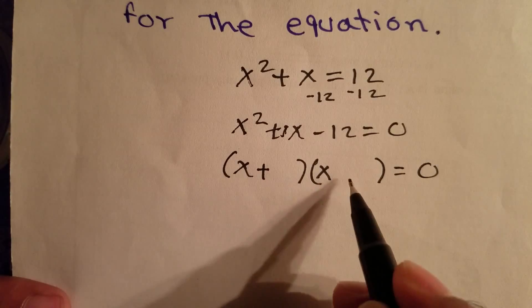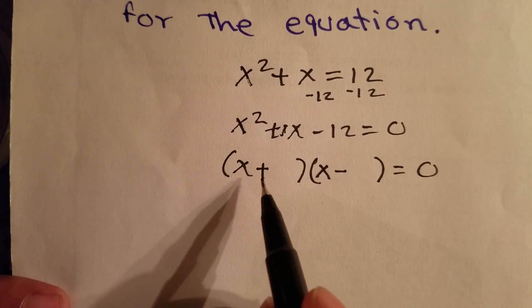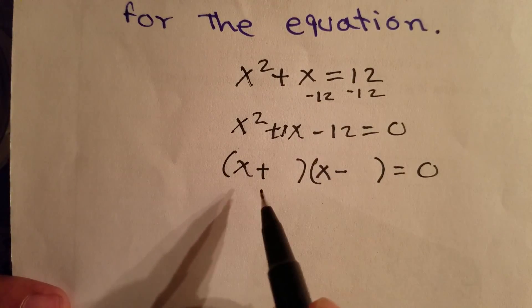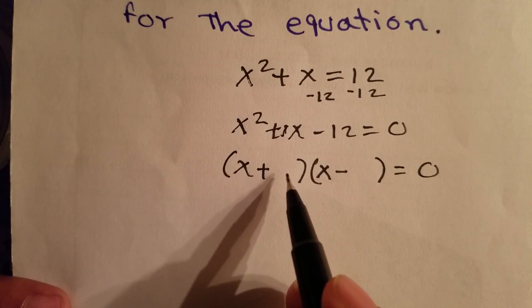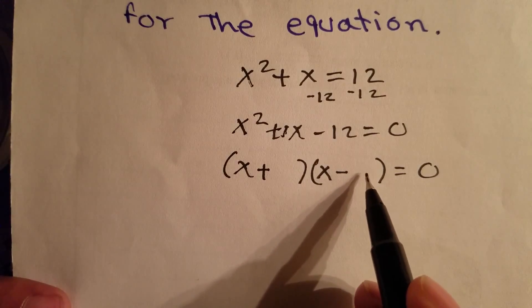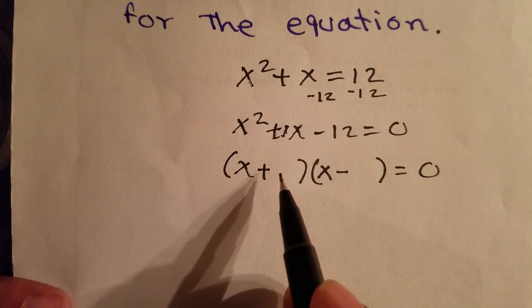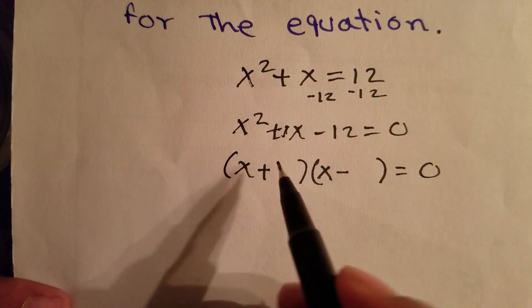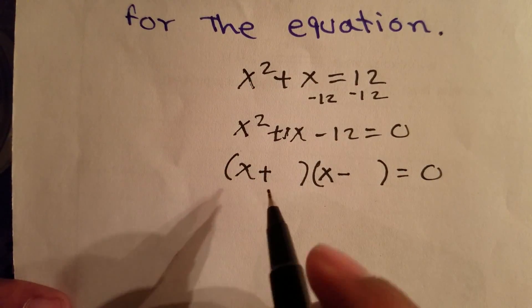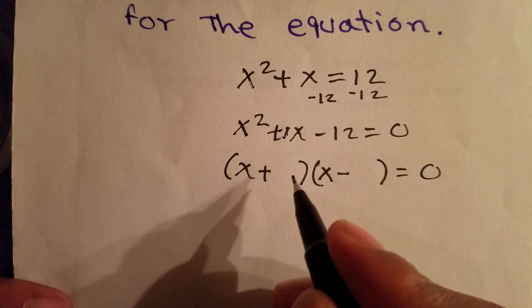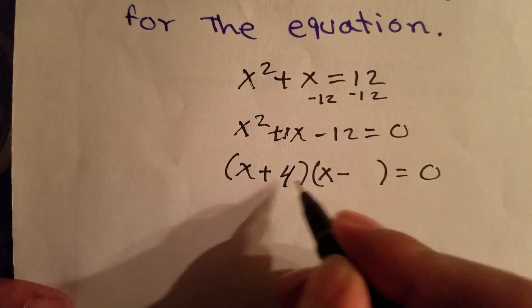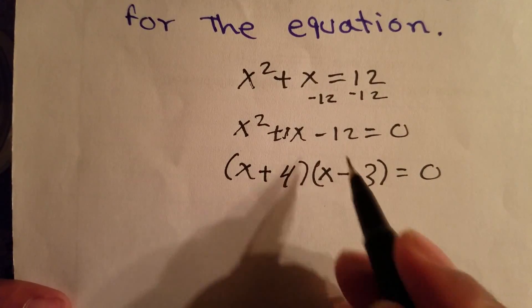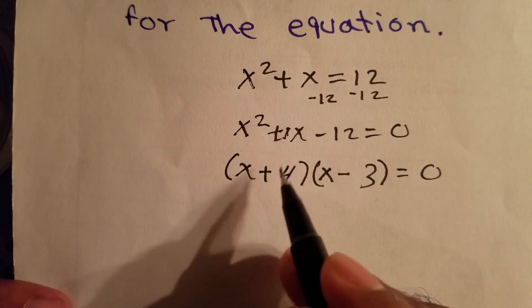This is going to be plus and minus, because plus times minus is minus. The biggest number we're going to put here and the smallest number we're going to put here, because whatever sign we have from the biggest number when we add, we're going to get the same sign. So we need the positive sign. So our two numbers will be 4 and 3. So 4 × 3 = 12 and 4 - 3 = x.